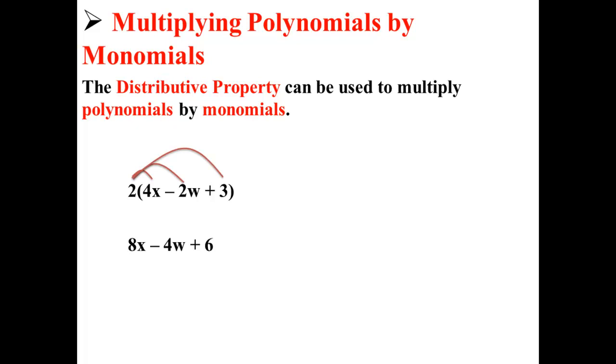Using the distributive property, we can distribute the 2 across the numbers in the parentheses to get a final answer of 8x minus 4w plus 6.